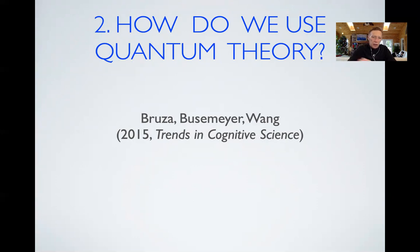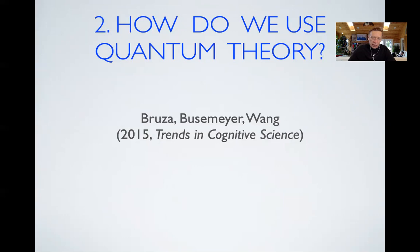The best way to learn about how we use quantum theory in cognition and decision is to compare it to a theory you already know — classical probability theory, the Kolmogorov theory. Quantum theory is based upon some axioms and Kolmogorov theory is based upon some axioms. Let's compare these two sets of axioms and see how they differ.